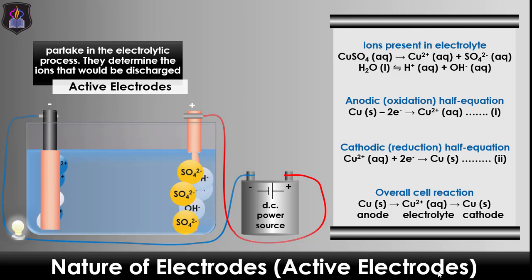That is all about the preferential discharge of ions during electrolysis. In our next lesson, we will be looking at the quantitative effects of electrolysis on the electrolysis of copper(II) sulfate solution using inert and active electrodes. Click the like button and subscribe to our channel to get notified when the video is published. Thanks for watching.